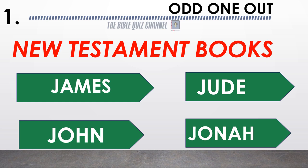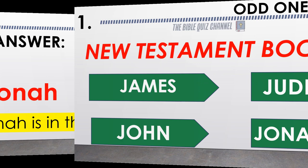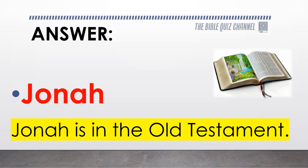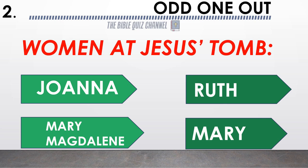New Testament book — select the odd one out: James, Jude, John, or Jonah? Jonah is in the Old Testament. Women at Jesus's tomb — Joanna, Ruth, Mary, or Mary Magdalene — which is the odd one out?